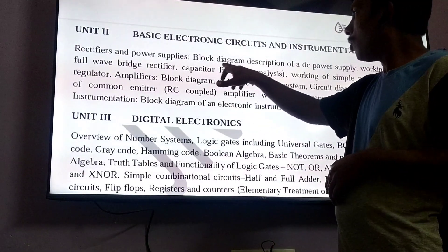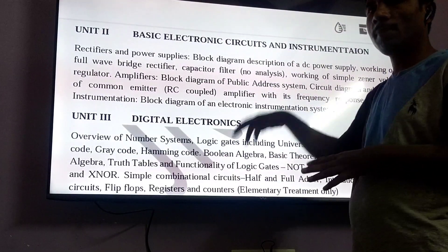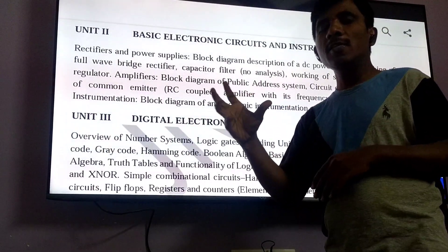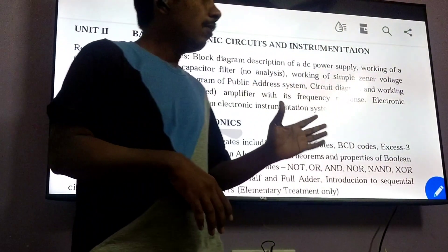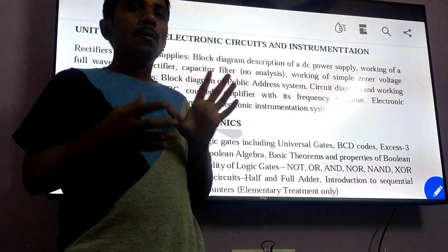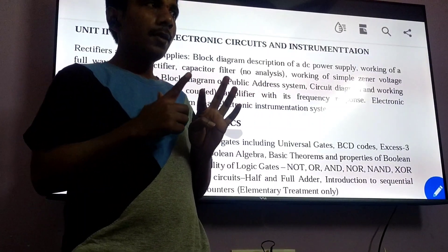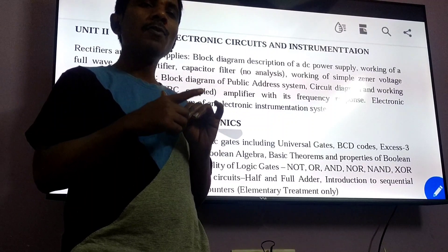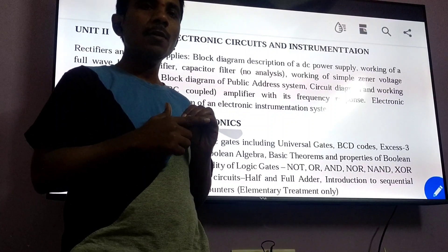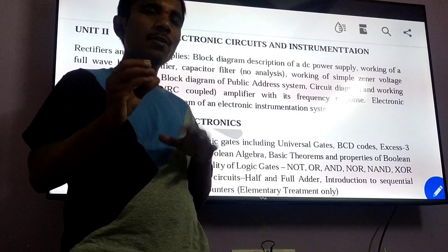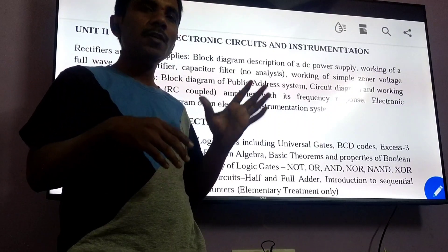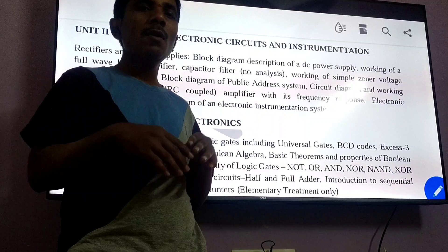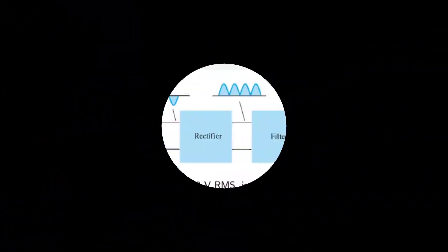Let us see the block diagram description of DC power supply. The DC power supply you are watching in laboratories consists of a step-down transformer, rectifier, filter, and voltage regulator, after which the voltage is maintained constant. The regulated power supply used in laboratories is a DC power supply system. You can see the block diagram representations here.